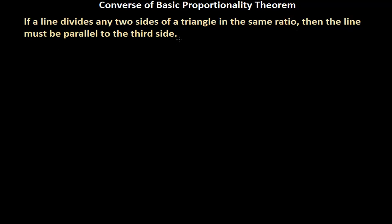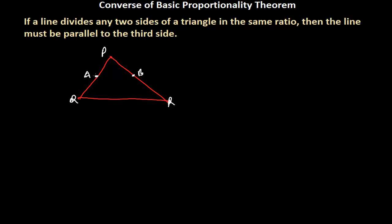Let me make a figure. Suppose this is my triangle PQR, and in this triangle I have two points A and B. The line AB intersects sides PQ and PR. Now AP and AQ have been intersected by the line AB, and similarly PB and BR are also intersected. When they get intersected, we get a ratio — AP over AQ has the same ratio as PB over BR. The question says we need to prove that line AB and QR are parallel.